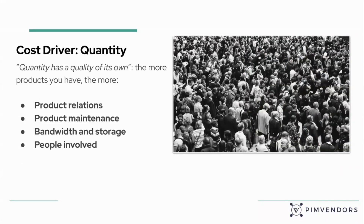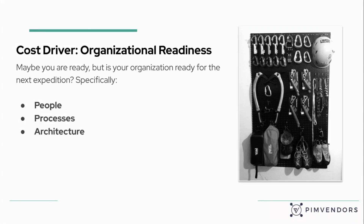As we say, quantity has a quality of its own. If you have more products and want to manage more products in your PIM, you'll have increased complexity because of increased product relationships, more maintenance, the need for more bandwidth and storage, and probably more people involved in the product information management process — all of which impact costs. And finally, organizational readiness, which is often overlooked. Is your organization ready for the next step? Are your people, your processes, and your IT architecture ready to implement a PIM or a new product information management tool?